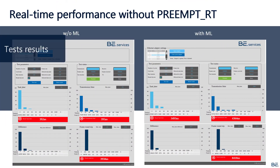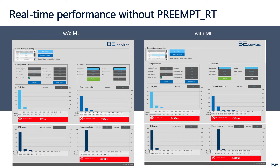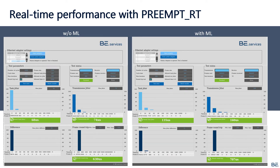Of course, we also executed long-run tests. Real-time performance with the pre-MRT patch is presented here. With the real-time kernel, the results are much better. Without machine learning, the task jitter and transmission jitter are about 70 microseconds, and the round-trip time is about 600 microseconds. When running machine learning in parallel, the task jitter is 135 microseconds, the transmission jitter is 116 microseconds, and the round-trip time is about 700 microseconds — but these results are still very good.